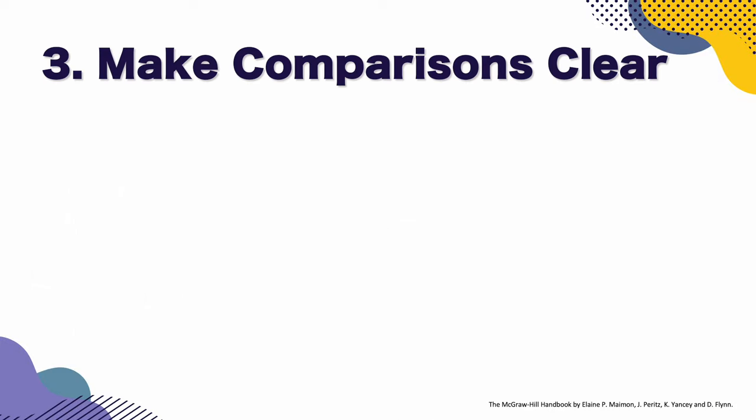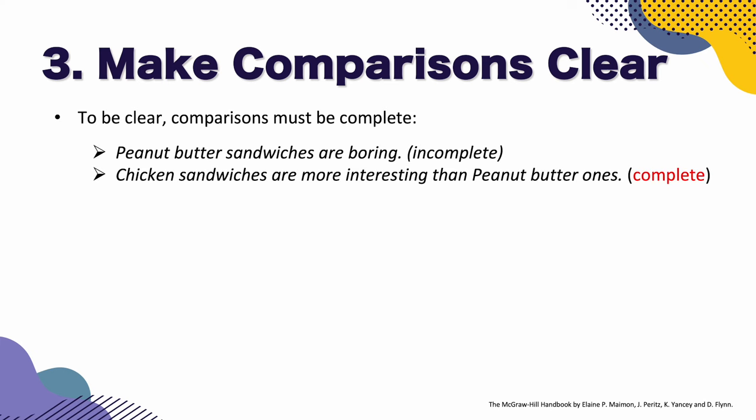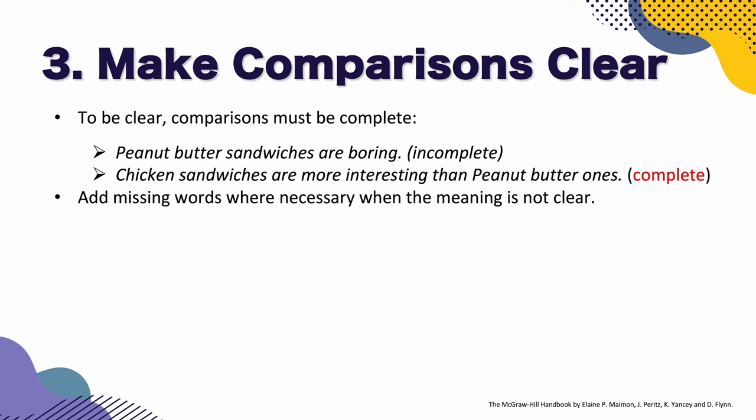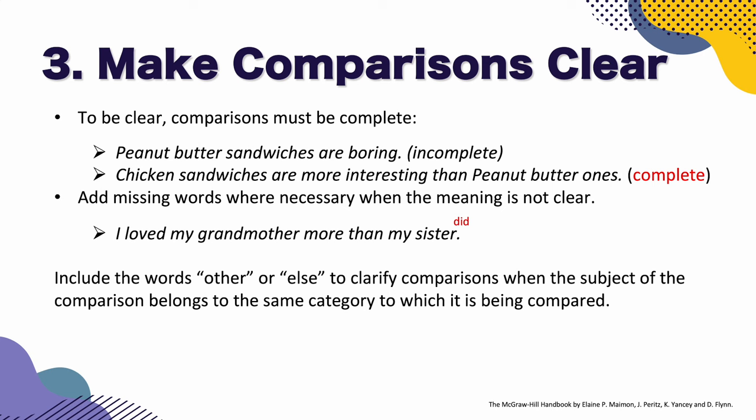Let's take a look at our third point: make comparisons clear. To be clear, comparisons must be complete. For example, 'Peanut butter sandwiches are boring' is incomplete — I don't give an option. If I said 'Chicken sandwiches are more interesting than peanut butter ones,' it's complete and the meaning is clear. Add missing words where necessary when the meaning is not clear. For example: 'I loved my grandmother more than my sister' — did you love your sister more than your grandmother? I meant: 'I loved my grandmother more than my sister did.' That makes it clear.